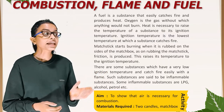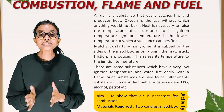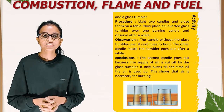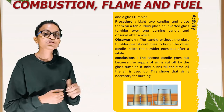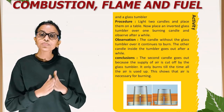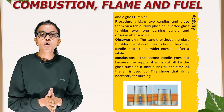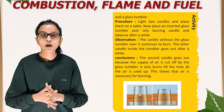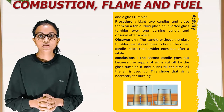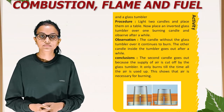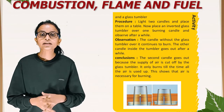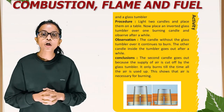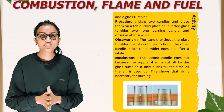Activity: The aim of this activity is to show that air is necessary for combustion. Materials required: two candles, a matchbox, and a glass tumbler. Procedure: Light two candles and place them on a table. Now place an inverted glass tumbler over one burning candle and observe after a while. Observation: The candle without the glass tumbler continues to burn, while the other candle inside the tumbler goes out after a while. Conclusion: The second candle goes out because the supply of air is cut off by the glass tumbler. It only burns till all the air is used up. This shows that air is necessary for burning.